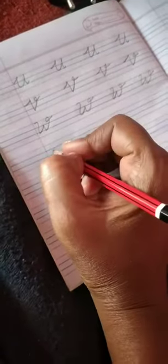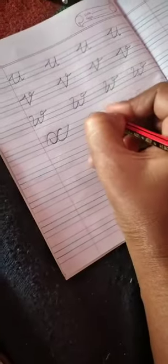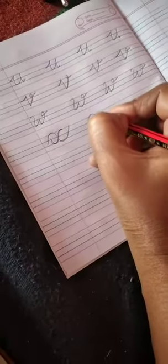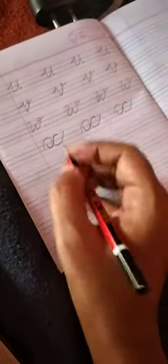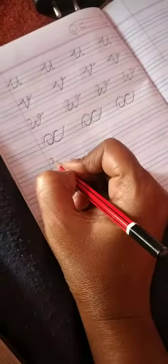Then comes the X. Start from this line, make curve, go up and write X. This is X. Then we have Y. Y comes in four lines.